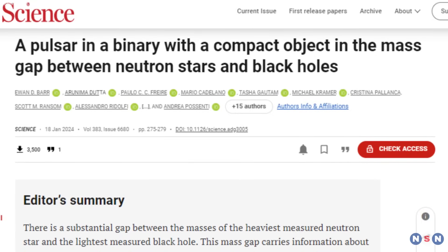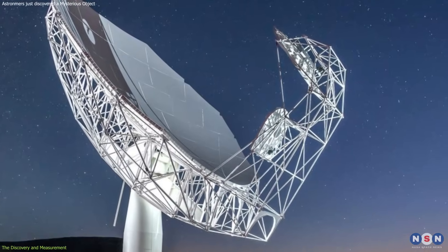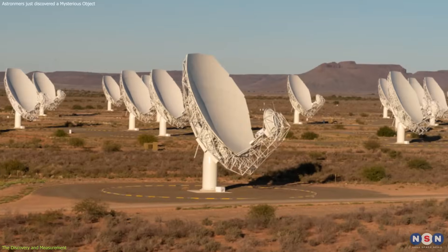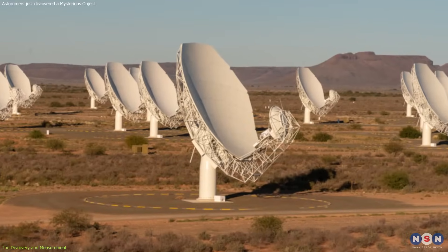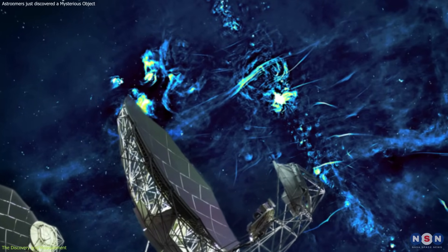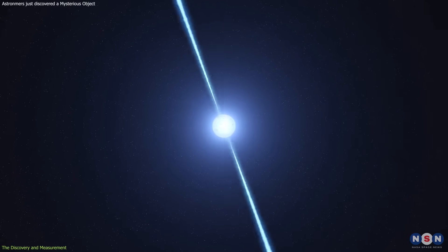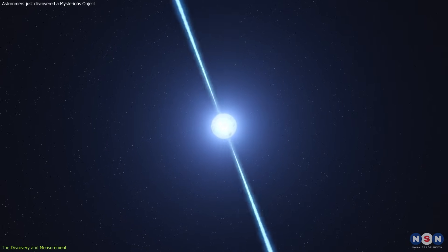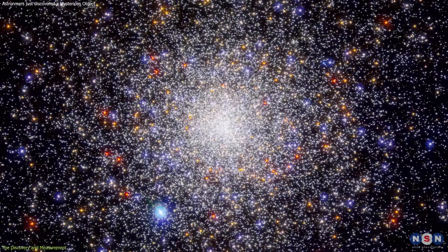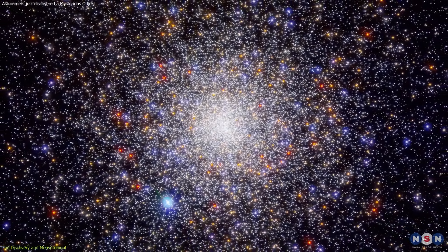The mystery object was discovered by a team of astronomers using the Meerkat radio telescope in South Africa. It is one of the most powerful radio telescopes in the world, and it can detect faint signals from distant sources in the sky. One of these sources is a millisecond pulsar named PSR J0144002E, located in a globular cluster of stars named NGC 1851.